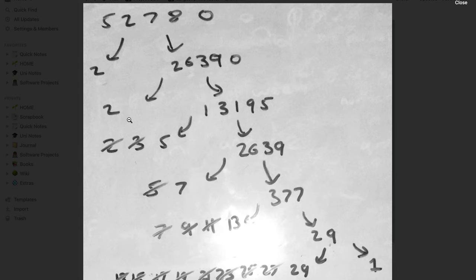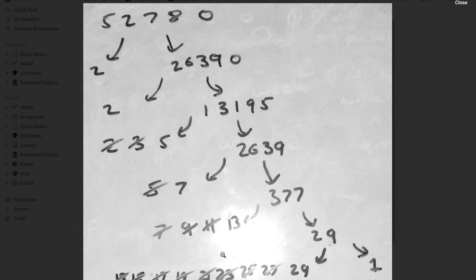We divide by 2 once, divide by 2 twice, and then we can't divide by 2 anymore, so we try dividing by 3 — we can't — then 5, and we divide by 5. We can't divide by 5 a second time, so we try 7. We can't divide by 7, 9, or 11, so we try 13 and divide by that. Finally, we get up to 29, keep trying odd numbers, realize we can divide by 29, and we get a quotient of 1.